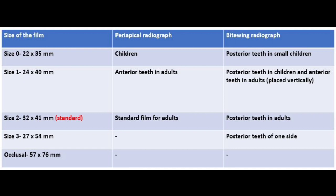Size 2 is the standard film size, measuring 32x41mm, used for making periapical radiographs of adults and also bite wing radiographs of the posterior teeth in adults. Size 3, measuring 27x54mm, is only available for bite wing projection. It is narrower than size 2 and is used to demonstrate all the posterior teeth of one side.